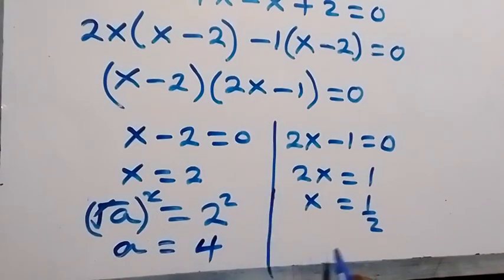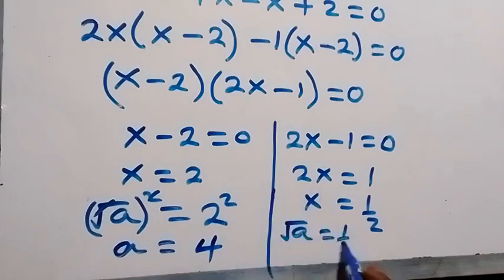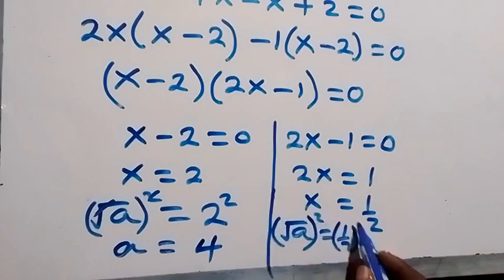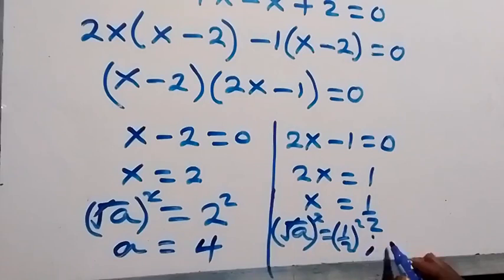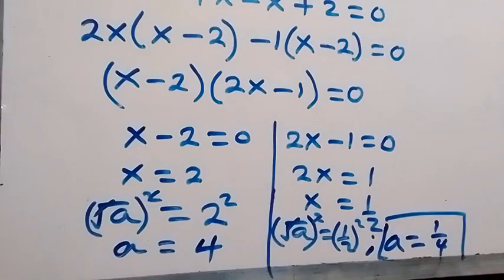For x equals 1/2: root a equals 1/2. Squaring both sides, the square root cancels, giving us a equals 1 over 4. So the two solutions are a₁ equals 4 and a₂ equals 1 over 4.